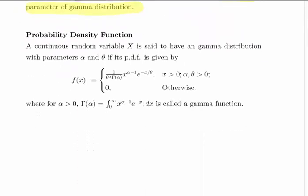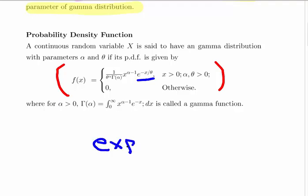The probability density function is given as follows — we are going to use this as if it were coming from a formula sheet. One important remark is that we have e to the power of minus X divided by theta, that is the exponential of minus X divided by theta. This is very important because it has implications on how we carry out our calculations.